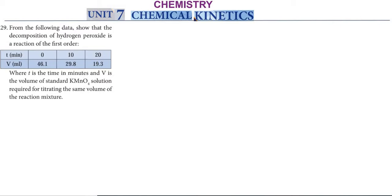In the titration method, unknown concentration is determined. We require the same volume of the reaction mixture for titration each time. The volume of KMnO₄ solution used is proportional to the amount of hydrogen peroxide present in the reaction.